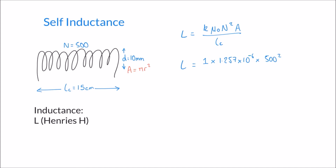The radius is half of the diameter, so 5 millimetres or 0.005 metres. So in the formula, the area is pi times the radius 0.005 squared.